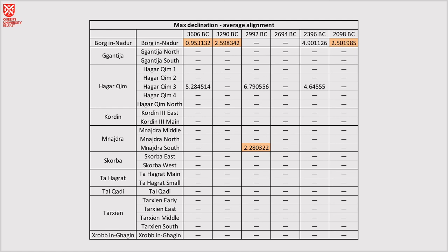So for example, this is the maximum declination of the moon, which occurs once every 18 years, I believe. Yeah. And if you see here, you can see that, for example, Borg in Nader has very low numbers, and that means that it is quite closely aligned to that maximum declination. Okay.